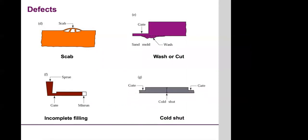A cold shut or discontinuity normally happens when you have two gates — two entrances of material into the mould — and when two streams of liquid metal from these two different gates meet, you have the generation of an interface between the two fronts of material that will not fuse together, producing a physical, well-defined interface.